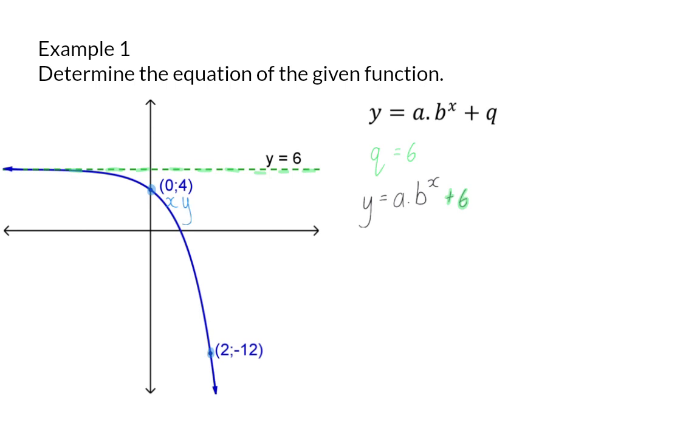So, I am going to substitute the y value with 4 and the x value with 0. If I now subtract the 6 on the left, I will have minus 2, and b to the power of 0 is 1, which means that a equals minus 2.